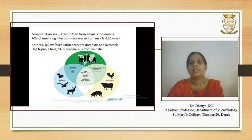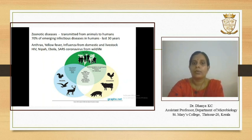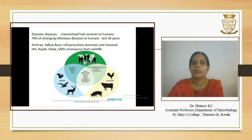Zoonotic diseases are naturally transmitted from vertebrate animals to humans, and it is estimated that 70% of the emerging infectious diseases in humans over the last 30 years are zoonotic. Examples include anthrax, tuberculosis, plague, yellow fever, and influenza from domestic animals, poultry and livestock, and HIV, Nipah, Ebola, and SARS-CoV-2 from wildlife species. Zoonotic diseases are spread either through vectors or non-vector routes such as air, water, food, or direct contact.